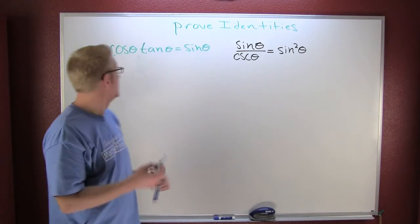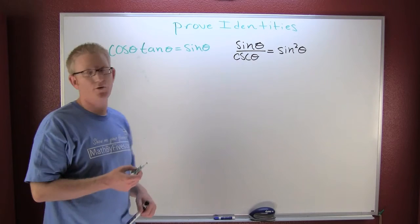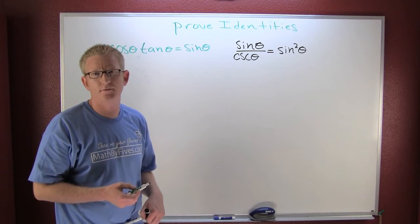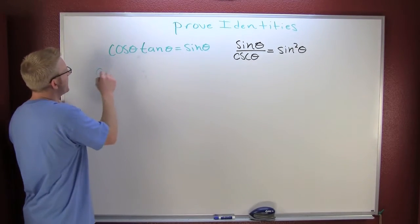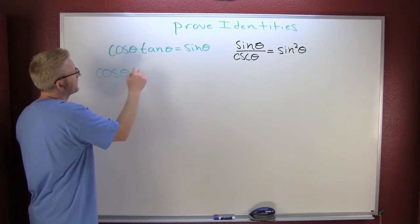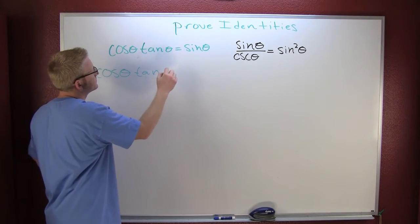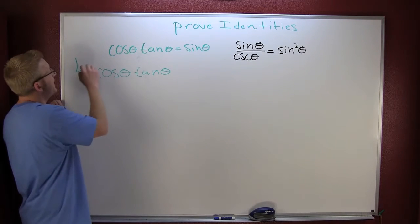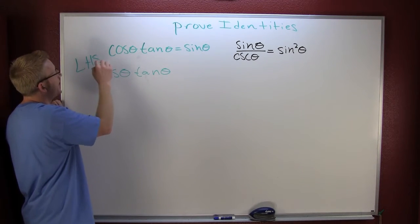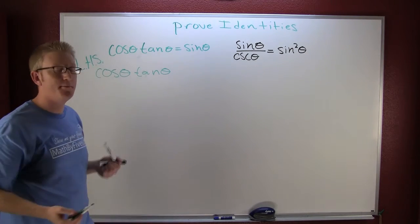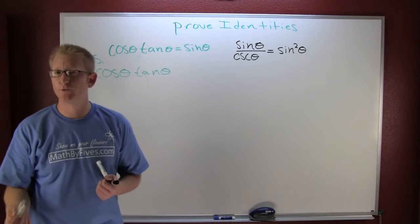Let's take a look at our green identity up here. I want to start on the more complicated side. Which side looks more complicated, cosine tangent or sine? Right, the cosine tangent. That's my left-hand side.